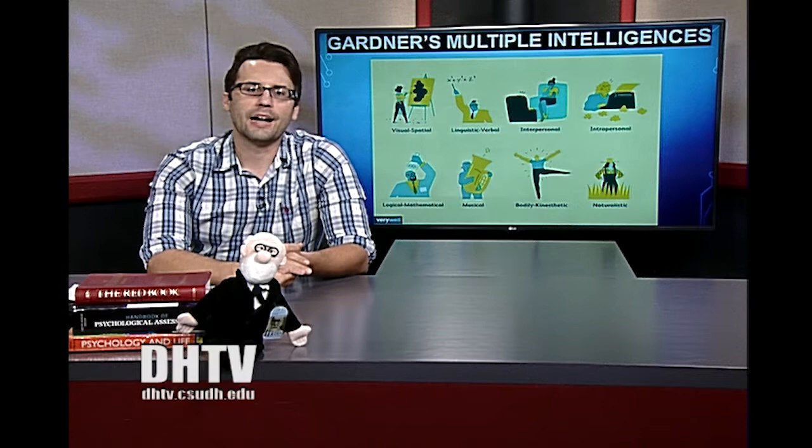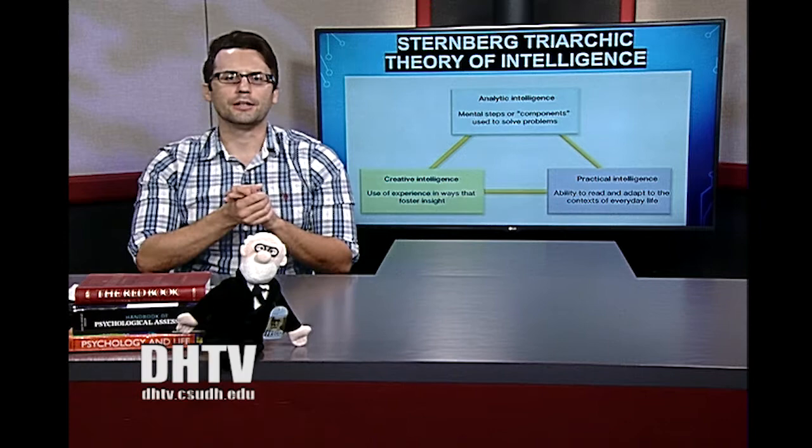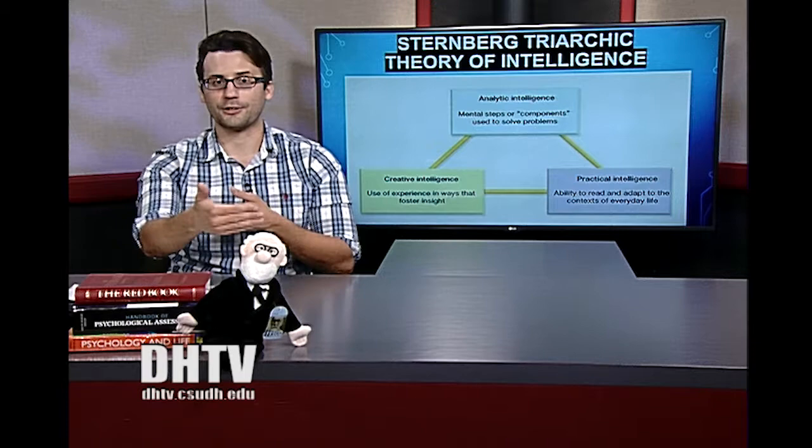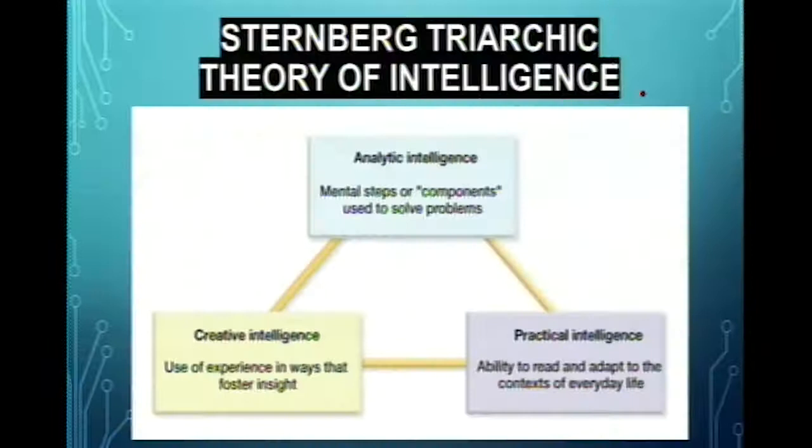Sternberg responded to the multiple intelligences idea by questioning whether some of those categories are really intelligences or just talents. For example, being really good at exercise doesn't necessarily mean you're intelligent in that domain. Sternberg came back with his triarchic theory of intelligence, identifying three kinds: analytical, creative, and practical intelligence.